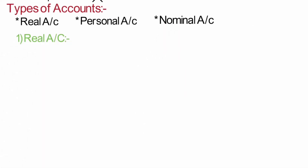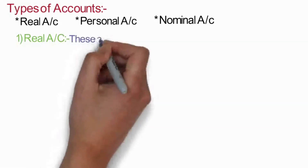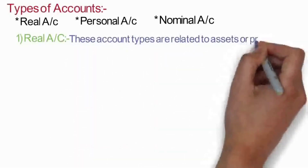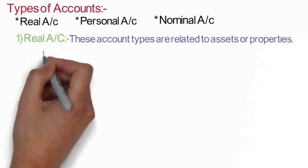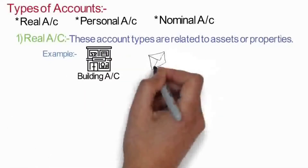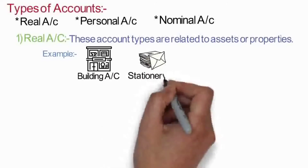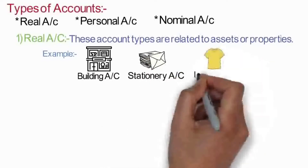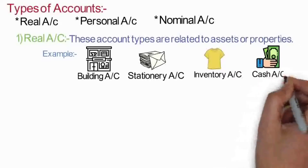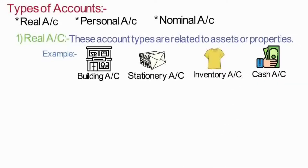What is a real account? These account types are related to assets or properties. For example, building account, stationery account, and inventory account. All of these — building, stationery, inventory, cash — are assets or properties, so these are all known as real accounts.